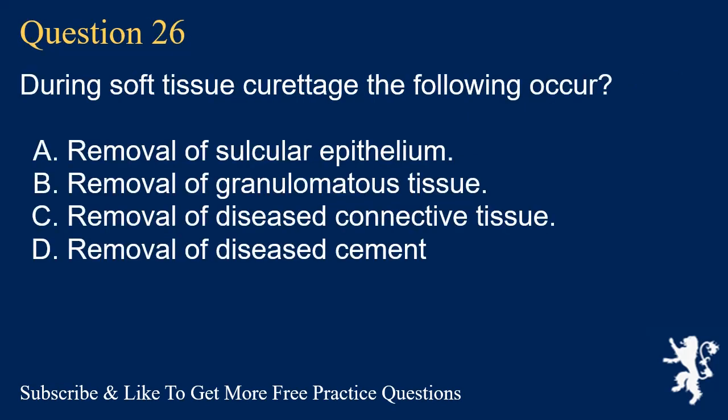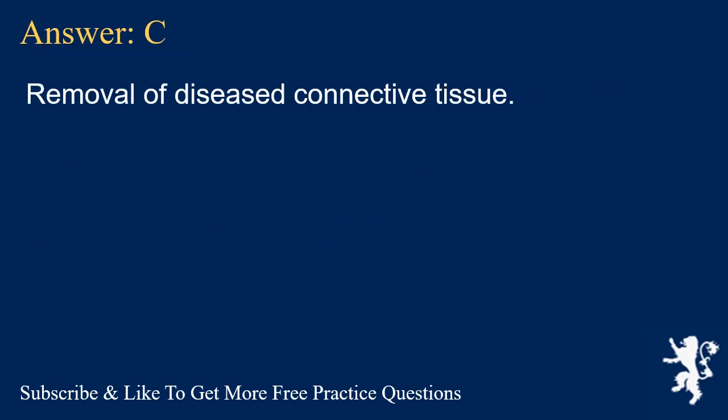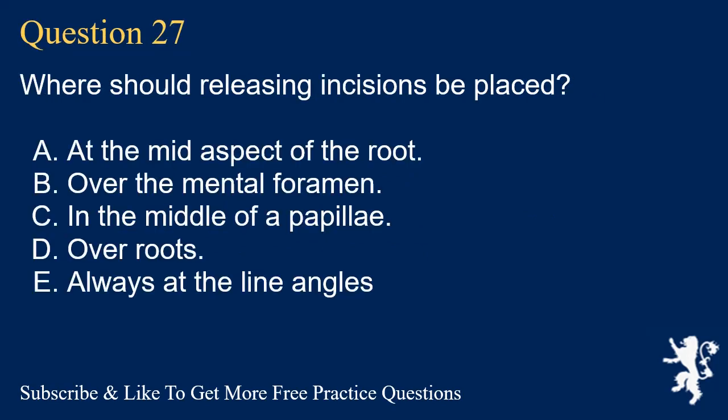Question 26. During soft tissue curettage, the following occur? A. Removal of sulcular epithelium. B. Removal of granulomatous tissue. C. Removal of diseased connective tissue. D. Removal of diseased cementum. Answer: C. Removal of diseased connective tissue.